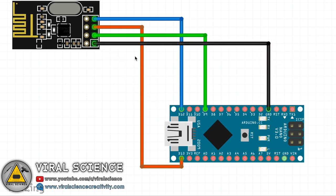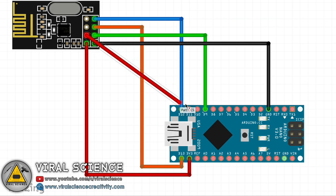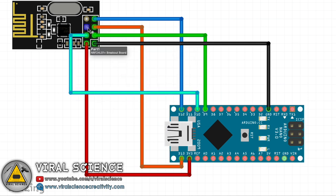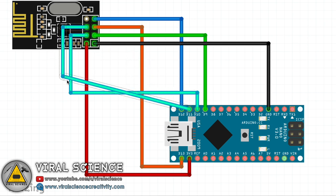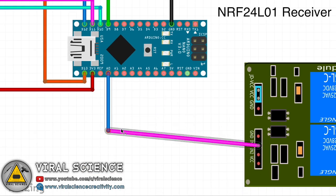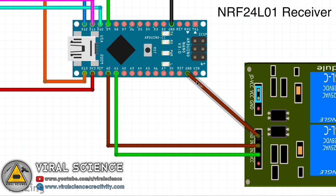Now we'll connect a relay module to this circuit diagram, and this complete module will become the receiver part of the project.